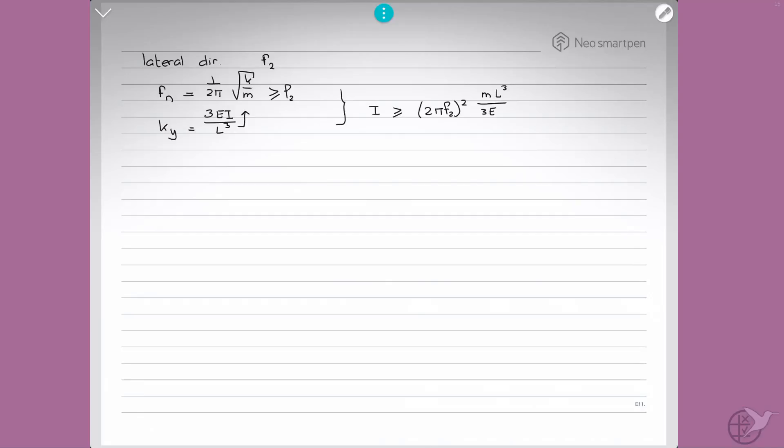Now the moment of inertia for bending is equal to πr³t, and if we substitute that into there and rework that for t, what we find is that our minimum wall thickness has to be larger or equal to 4 over 3π times f2 squared times mL³ over Er³.